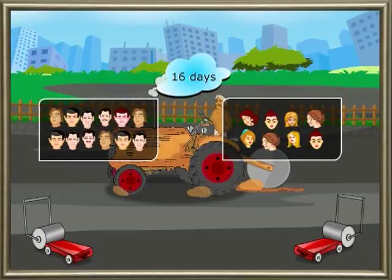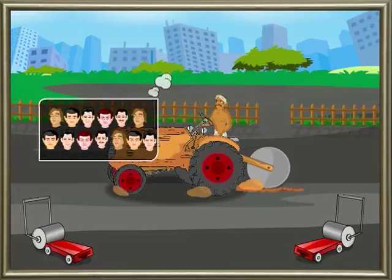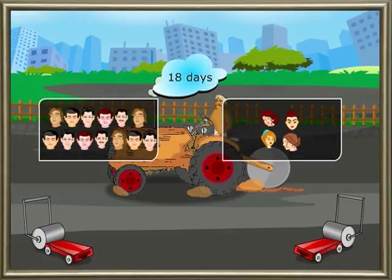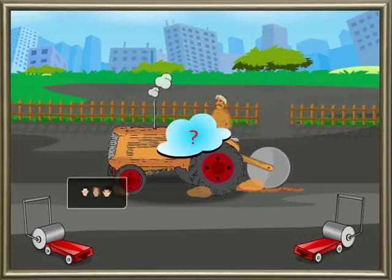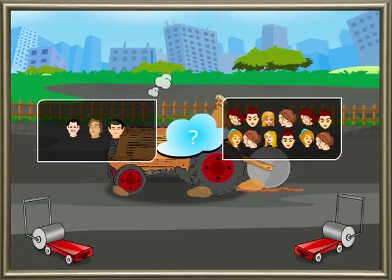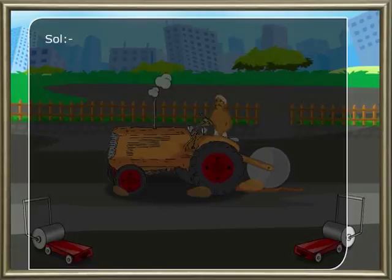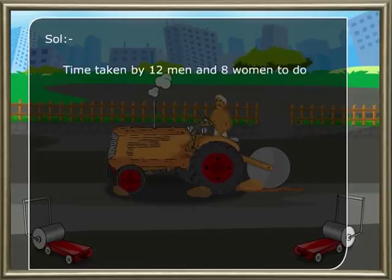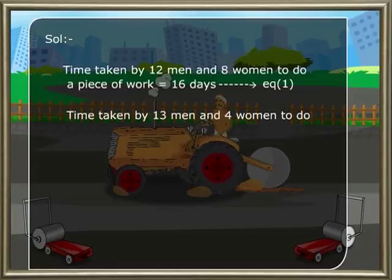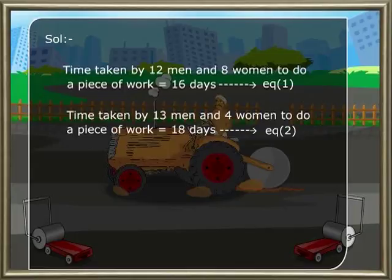Next problem: twelve men and eight women can do a piece of work in sixteen days. Thirteen men and four women can do it in eighteen days. How long will three men and twelve women take to do it? Equation one: time taken by twelve men and eight women is sixteen days. Equation two: time taken by thirteen men and four women is eighteen days.